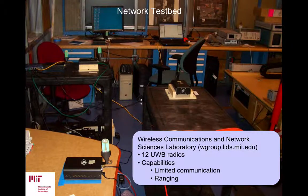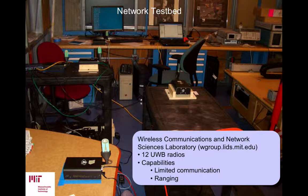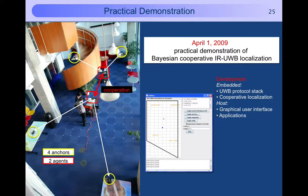Inspired by positive simulation results we implemented a small-scale testbed using Time Domain P220 ultra wideband radios. This network testbed was developed in the laboratory for information decision systems at MIT. Our setup involved four anchors and two mobile agents in cooperation. We developed a graphical user interface and a communication protocol stack. The GUI on the right shows the position of one agent as well as the position of the peer agent. This demo of Bayesian cooperative ultra wideband positioning was completed on April 1st 2009 and is the first in its kind to the best of our knowledge.